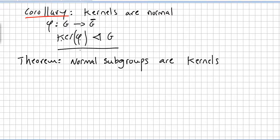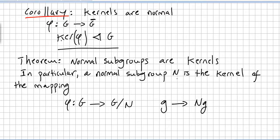We saw that the kernel of every homomorphism from two groups is always a normal subgroup of the group. Now we will see that all normal subgroups of a group are kernels. In particular, a normal subgroup N of G is the kernel of a mapping phi from G to the factor group G by N.